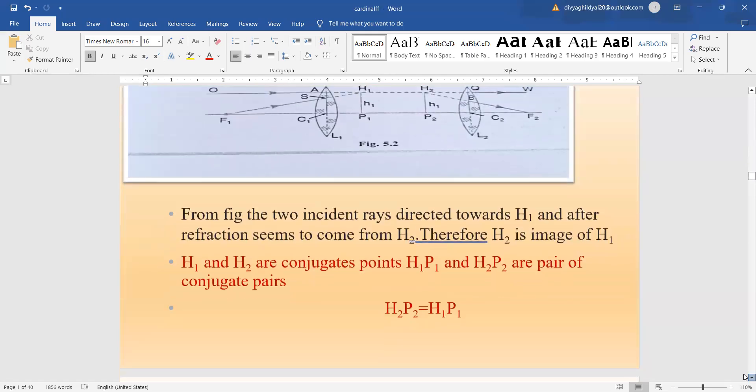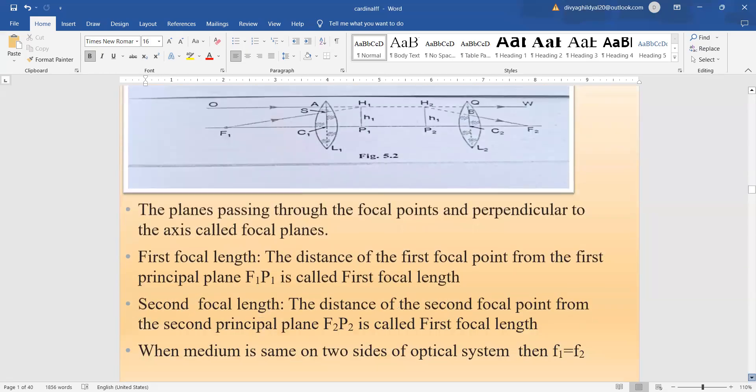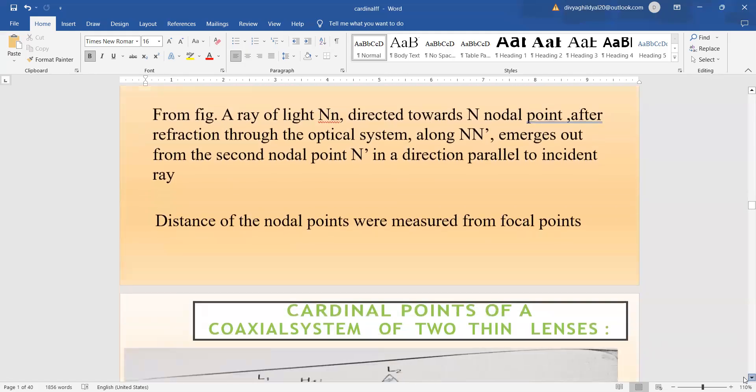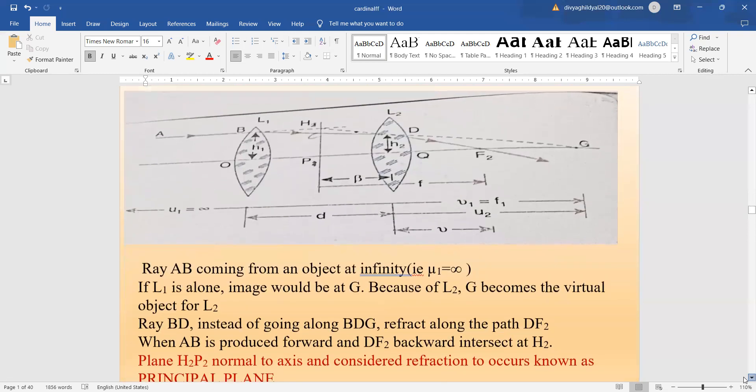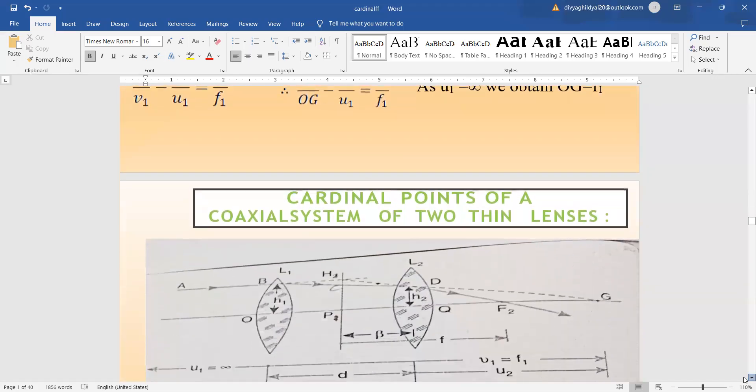First, we will see the focal points and focal planes. The first focal point F1 is the point on the principal axis such that a beam of light passing through it is rendered parallel to principal axis after refraction through the optical surface. The second focal point is F2. Nodal points are points on the principal axis where light rays without refraction intersect the optical axis. The formula we will be using is 1/F = 1/F1 + 1/F2 - X/(F1*F2).